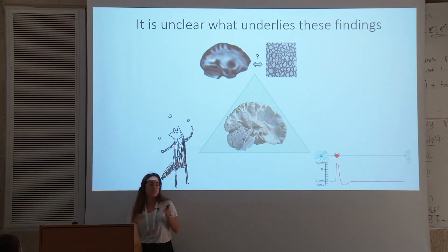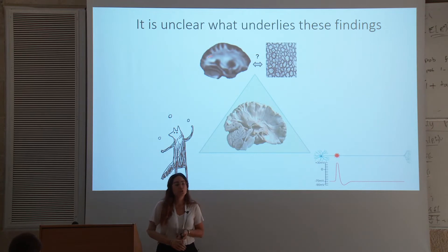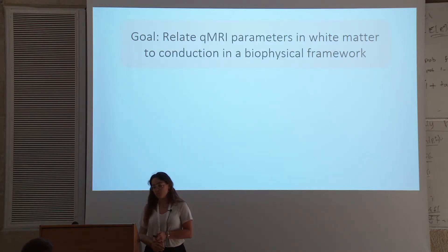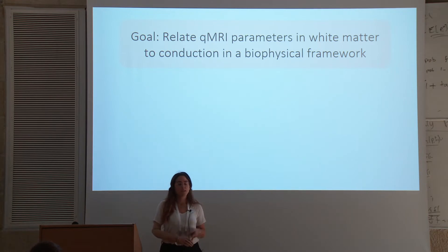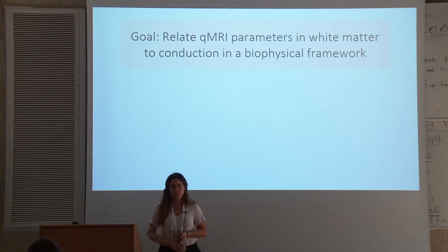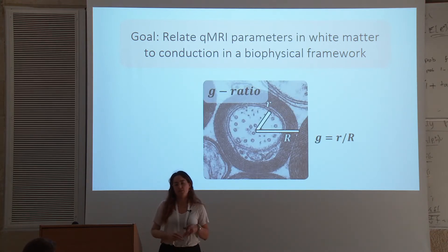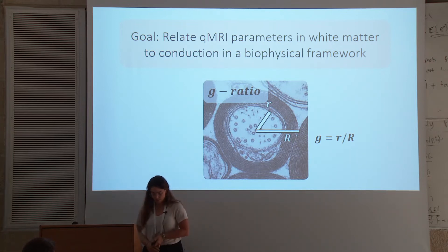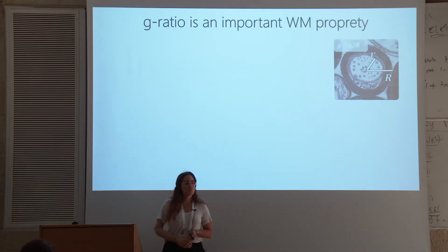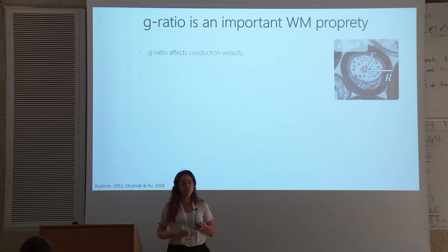But this relationship is not well established in vivo. So to shed some light on this relationship, we wanted to relate a few more parameters in white matter to conduction, using some biophysical framework. Specifically, we're going to use the g-ratio — that's the ratio between the inner and outer diameter of the myelin that is wrapped around the axon. It has been shown since the 1950s already to affect conduction.